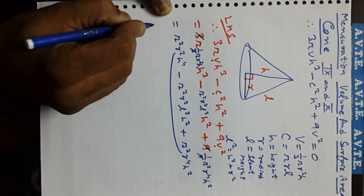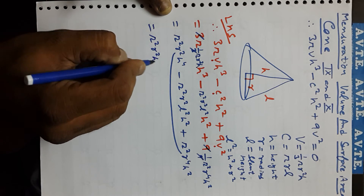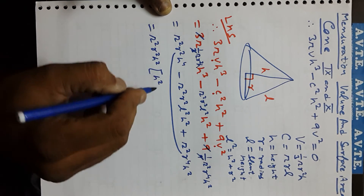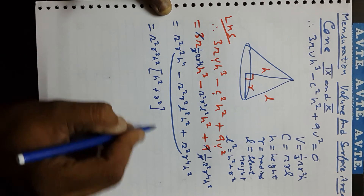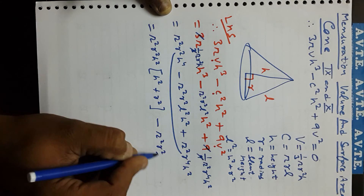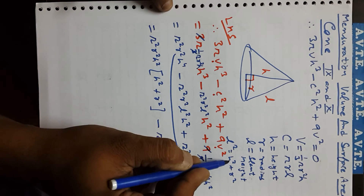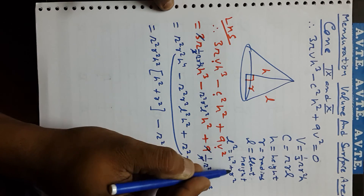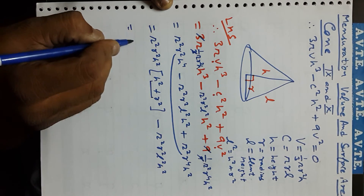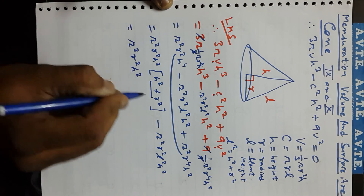From here we can take π²r²h² as a common factor, which gives us h² + r² inside the bracket, and we also have π²r²l²h² subtracted. We know that l² = h² + r², and here we also have h² + r².